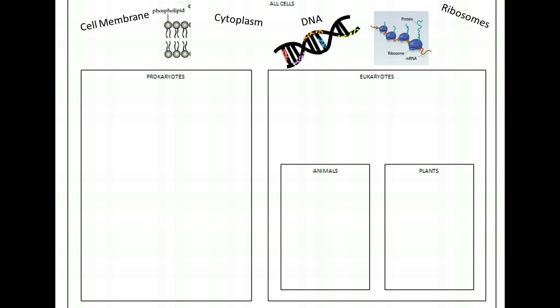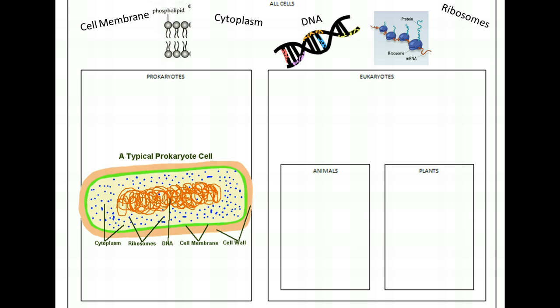So let's move on to prokaryotes. Prokaryotes have all of the above, and we typically draw them very simply with cytoplasm, ribosomes, DNA, cell membrane, and a cell wall. They're very simple — they have no organelles. Their DNA is circular, and they come in many different shapes and sizes with lots of cool little accessories to go with them.